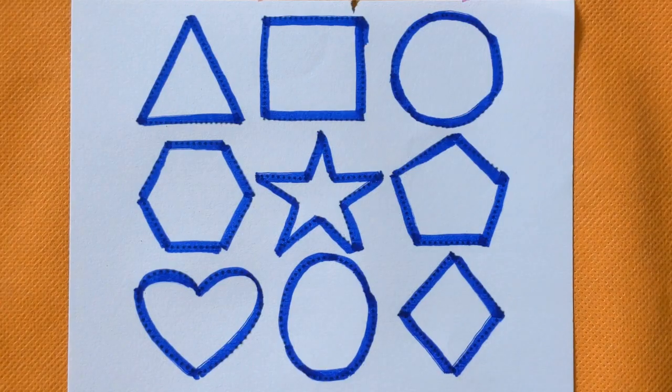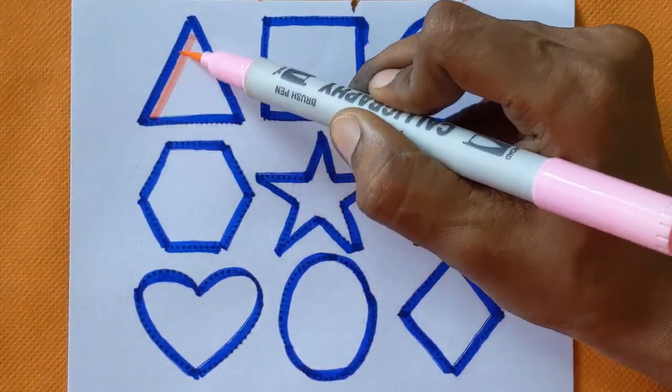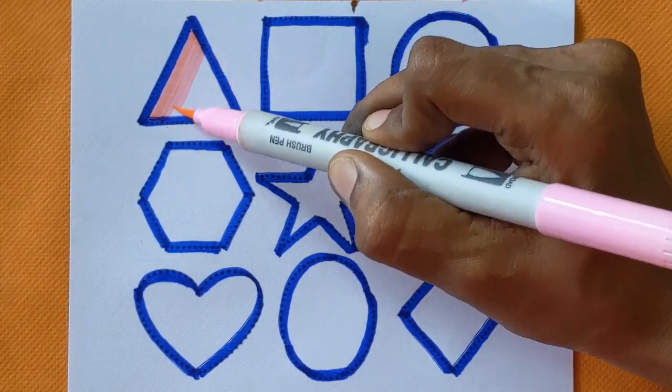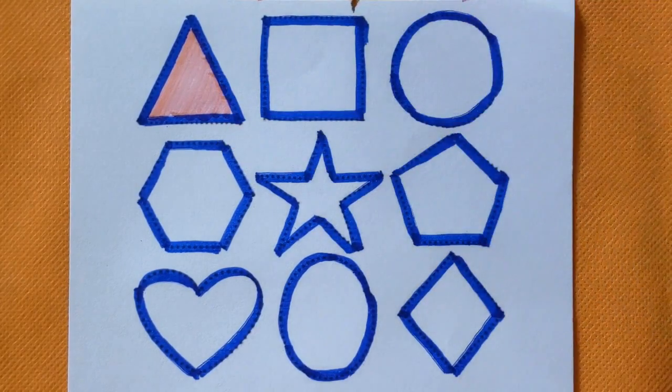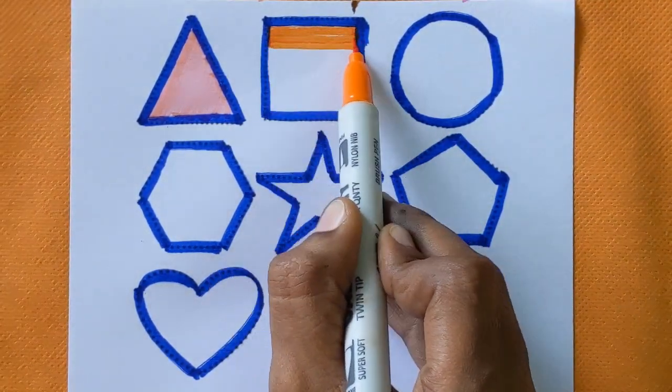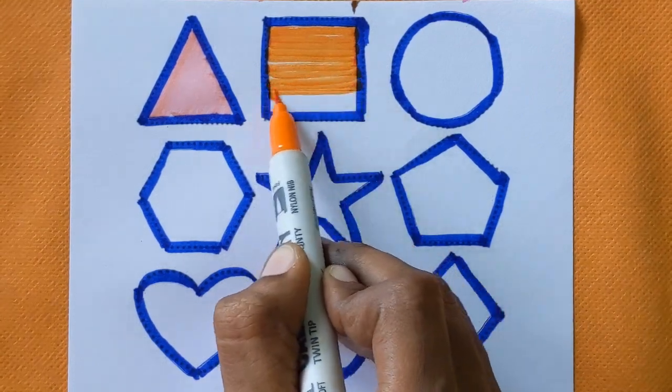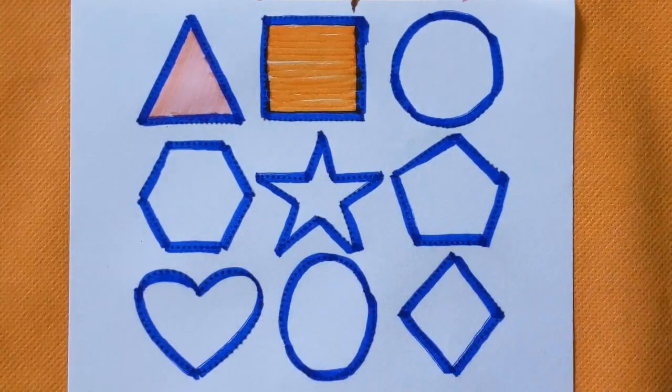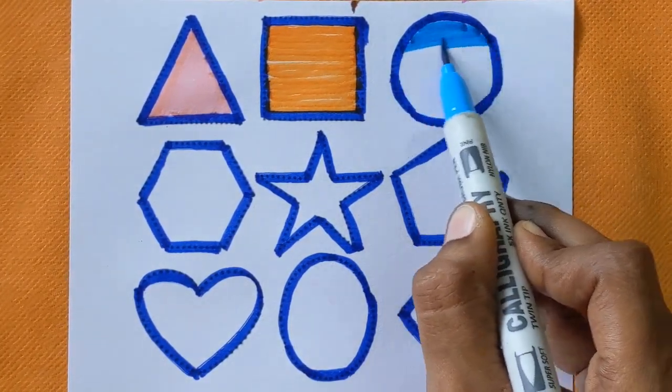Let's fill the colors now. This is triangle, pink color. Next is square shape, orange color. Circle shape, sky blue color.